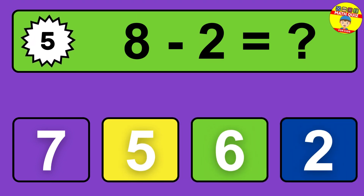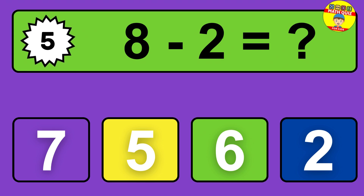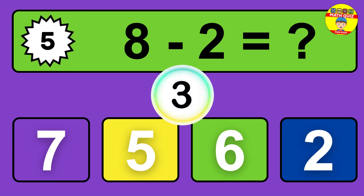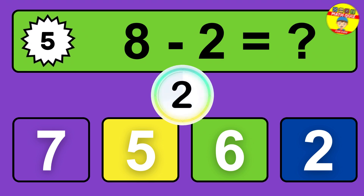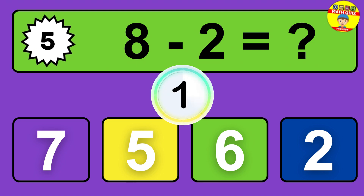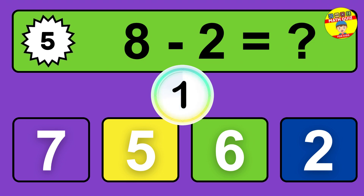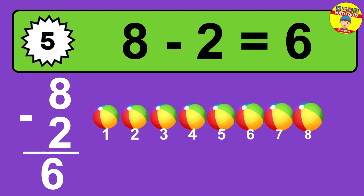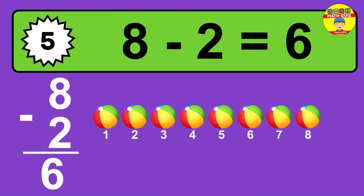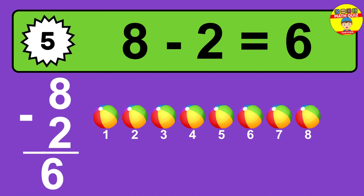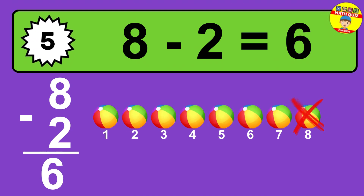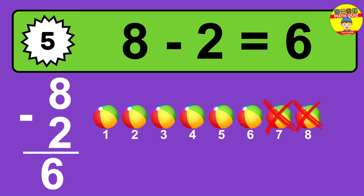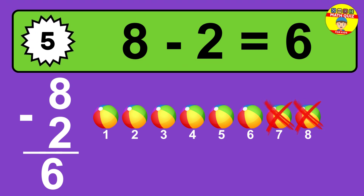Question five: seven minus two equals what? So the answer is seven minus two is five. Let's count it — one, two, three, four, five.